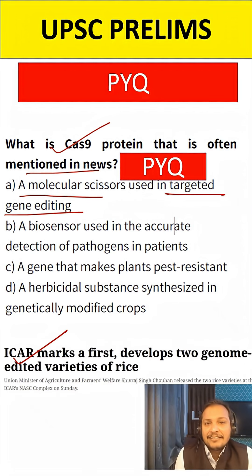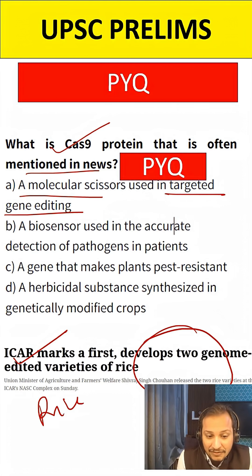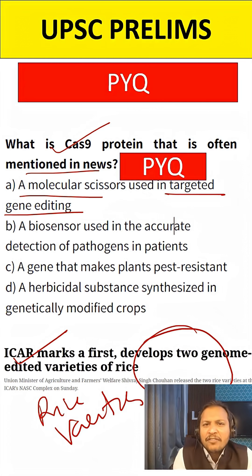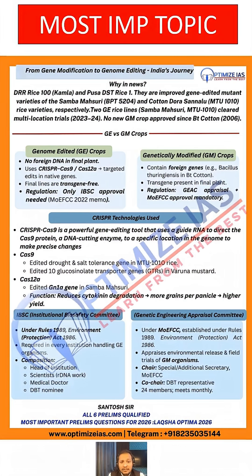ICAR has launched two gene-edited rice varieties — this is a very big development, and there will almost certainly be a question from this topic. The rice varieties are called Kamla (DRR Rice 100) and Pusha DST1. I have prepared an optima card covering each and every dimension of this topic.